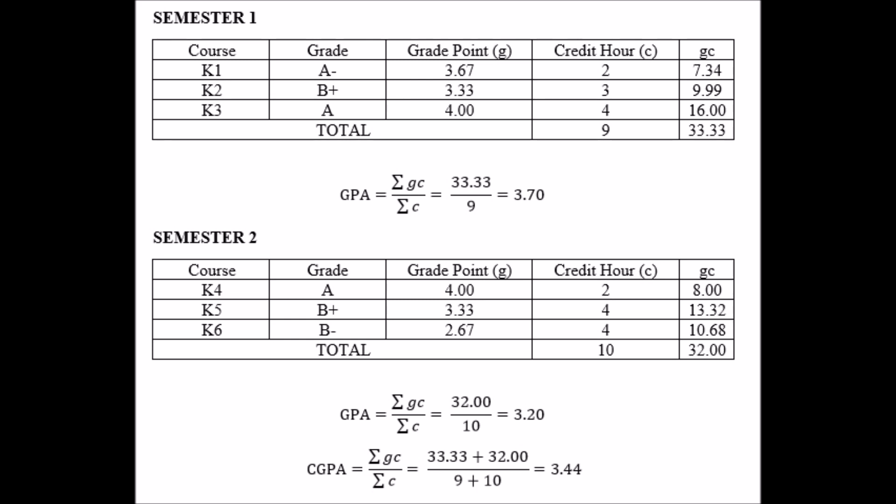We can also calculate our CGPA, or cumulative grade point average, using the same formula. However, this time the summation of GC is taken from all semesters, and the summation of C is also taken from all semesters — it is definitely not simply the average of the GPAs. It's important to emphasize that subjects with greater credit hour will have a greater influence towards your GPA and CGPA compared to subjects with fewer credit hours. In mathematical terms, this is called a weighted average, with credit hours being the weightage.